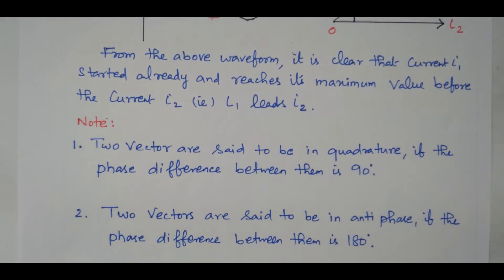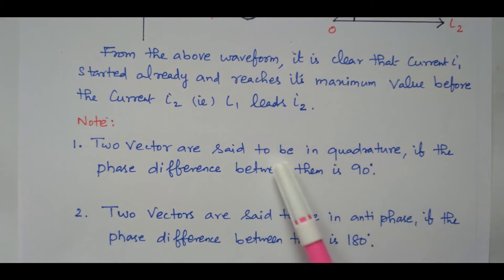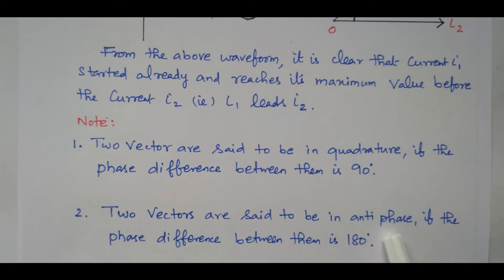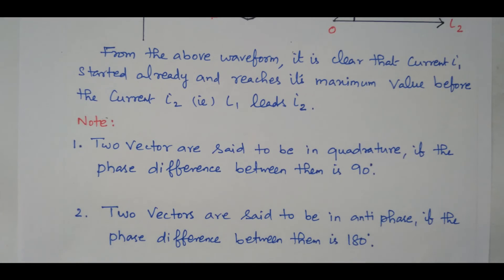From this we can note: two vectors are said to be in quadrature when there is exactly a 90-degree phase difference between them. Two vectors are said to be in anti-phase when the phase difference is 180 degrees. In-phase means 0 degrees, anti-phase means 180 degrees, and quadrature means 90 degrees. In this video, we discussed the phasor diagram of a sinusoidal waveform, covering two types: in-phase and out-of-phase — and within out-of-phase, leading and lagging. Thank you.